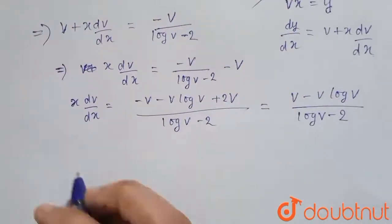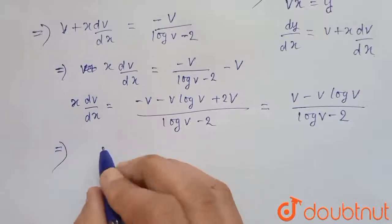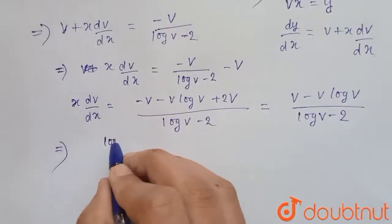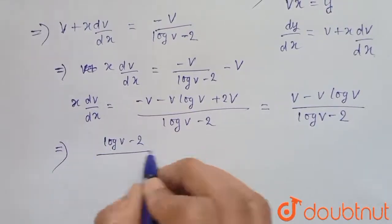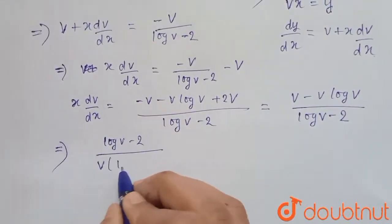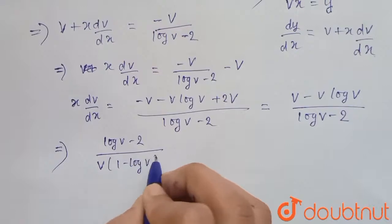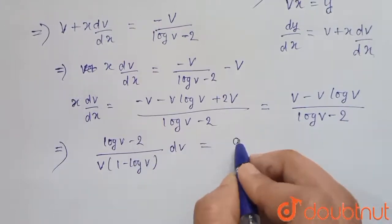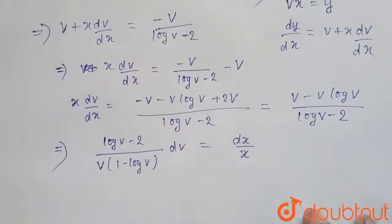Now separating the variables, we get (log v minus 2) dv divided by v·(1 minus log v) equals dx upon x.